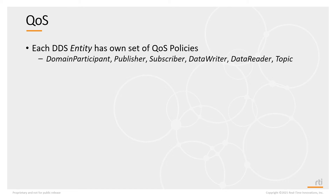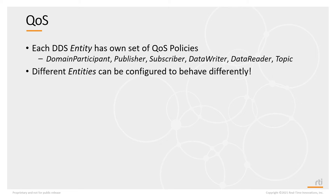QoS are applied to a DDS entity. There are six DDS entities: domain participants, publishers, subscribers, data writers, data readers, and topics. Each entity has its own set of QoS policies that configure it. Different entities can be configured to behave differently.